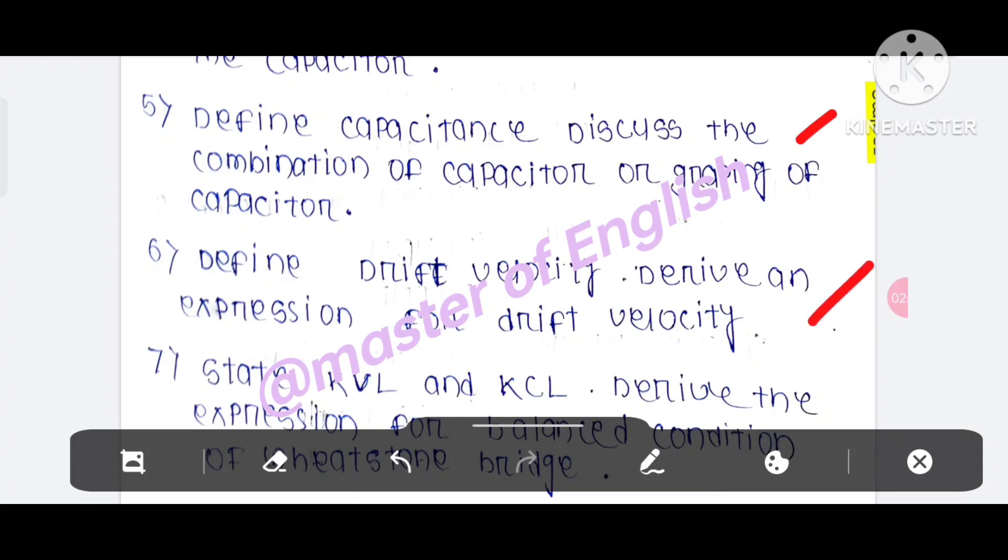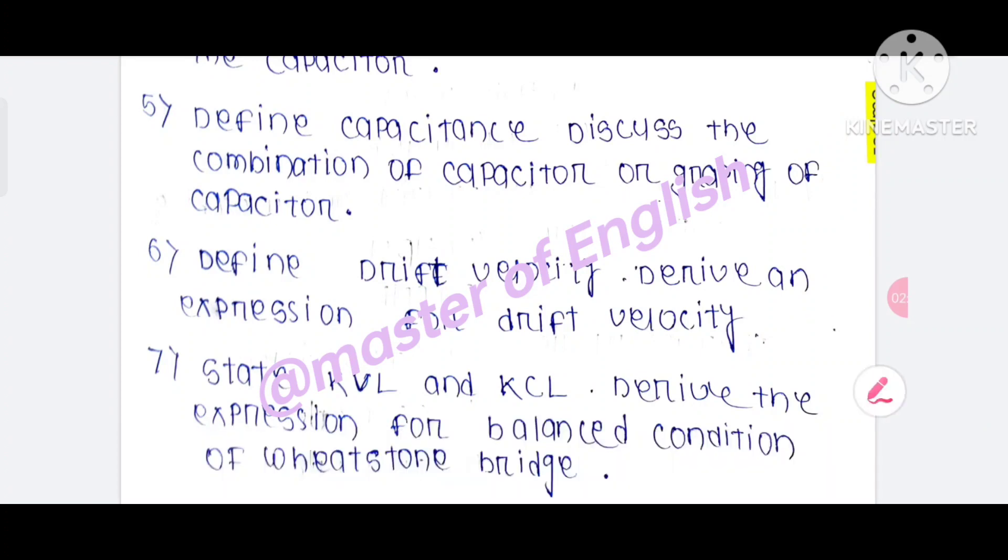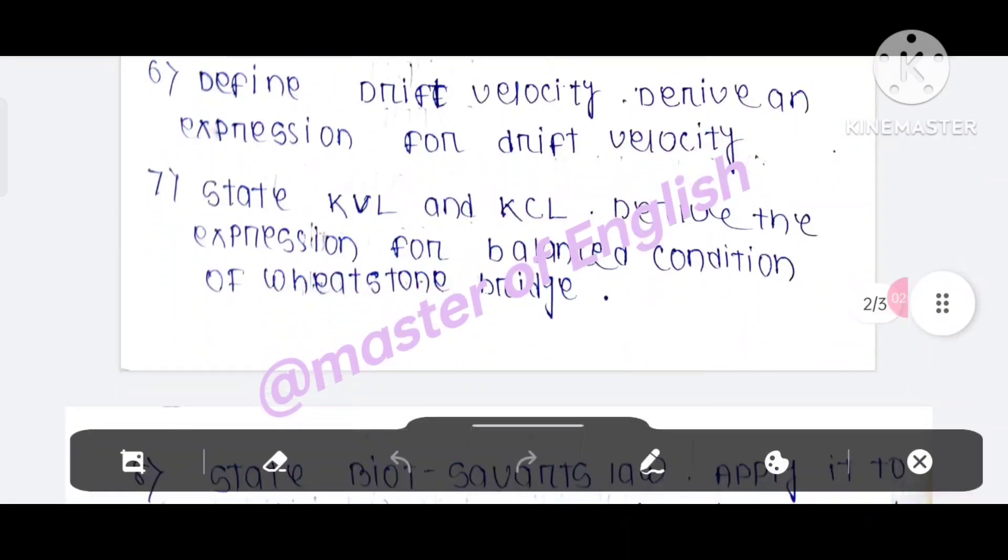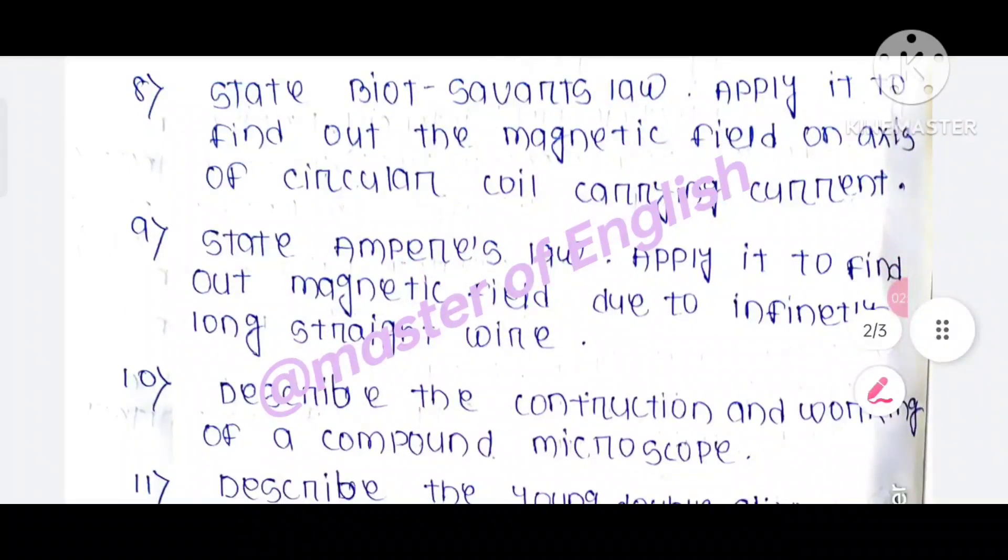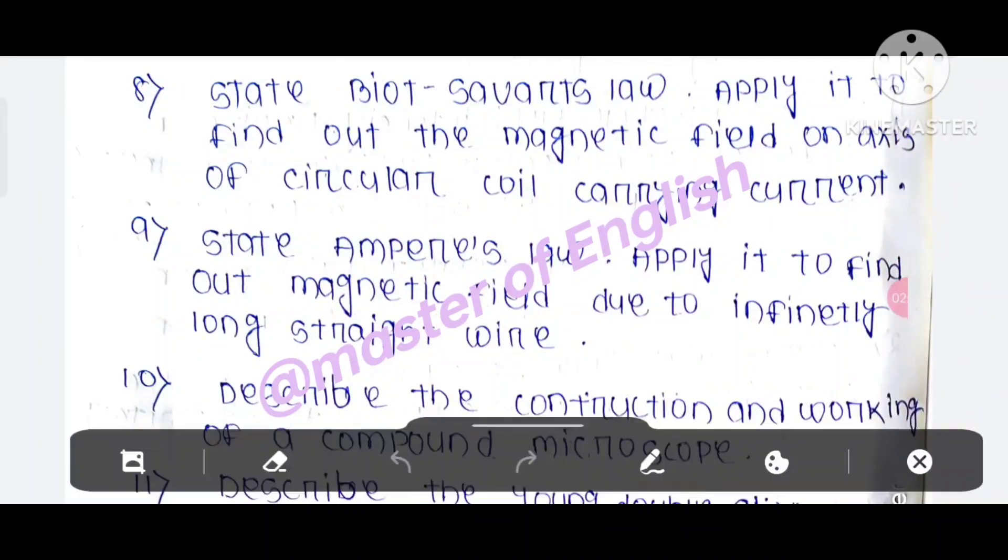Question number 7: state KVL and KCL, derive the expression for balanced condition of Wheatstone bridge. Question number 8 is also important.